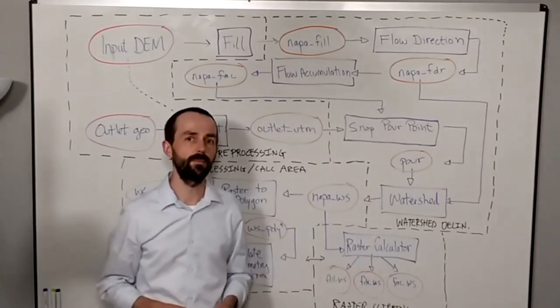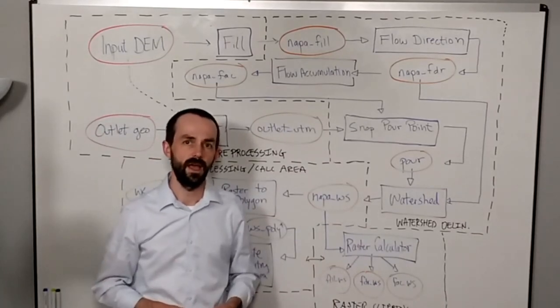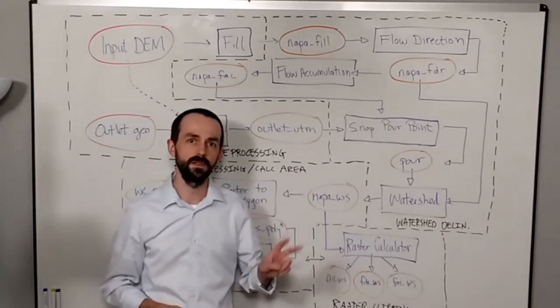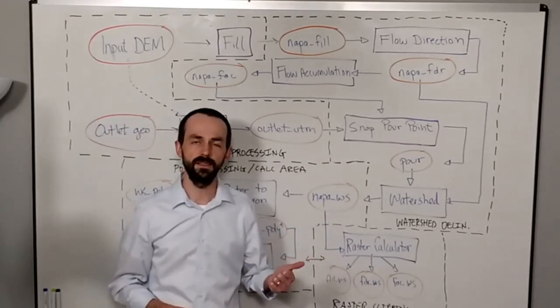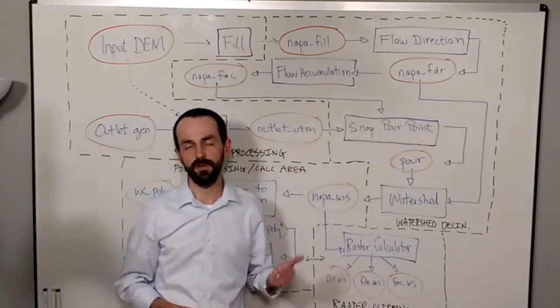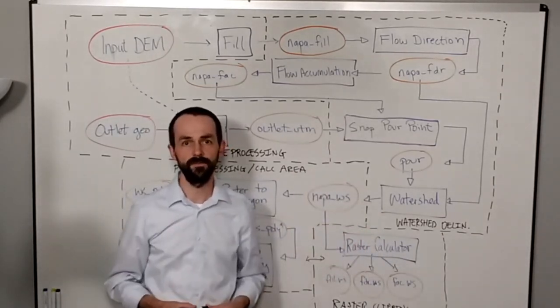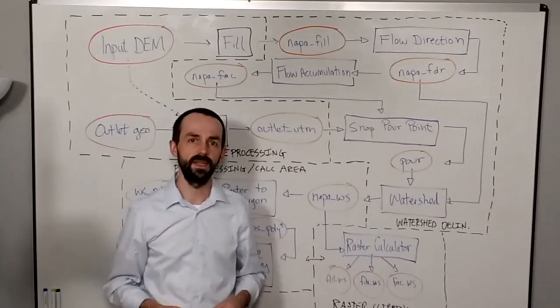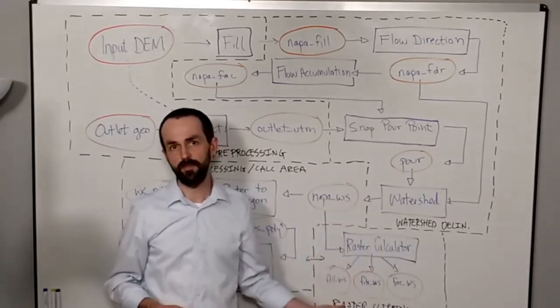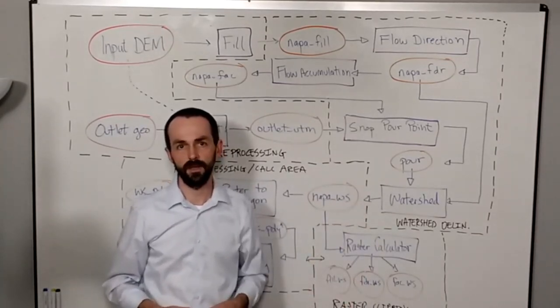how can we represent this in GIS? We can do this in two ways. The first way we're going to look at is using Model Builder, which is a graphical representation of this flowchart in the GIS software. And the second way we can represent this is through a scripted process using programming and code.